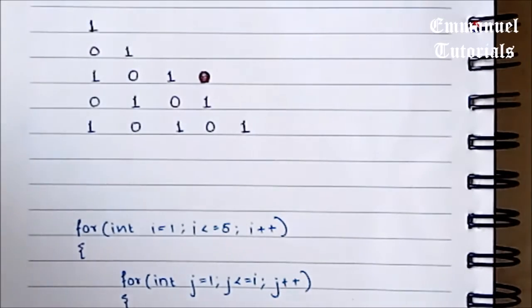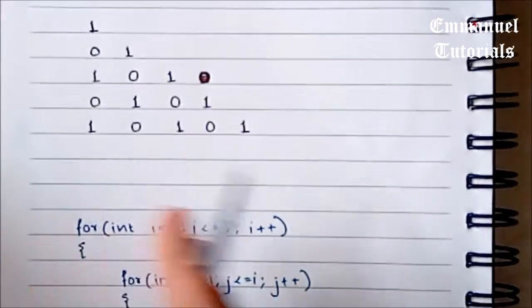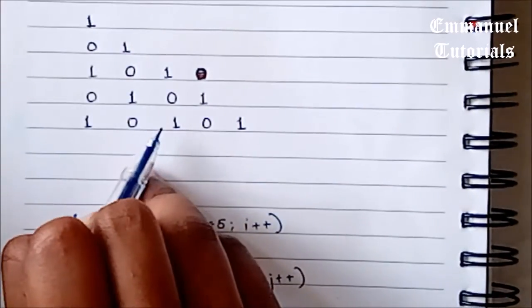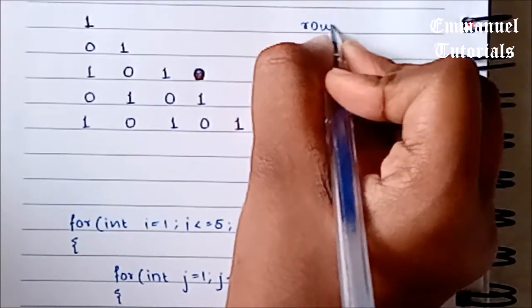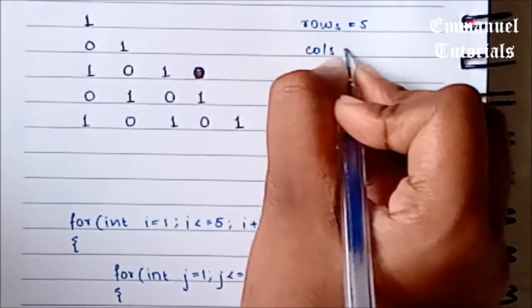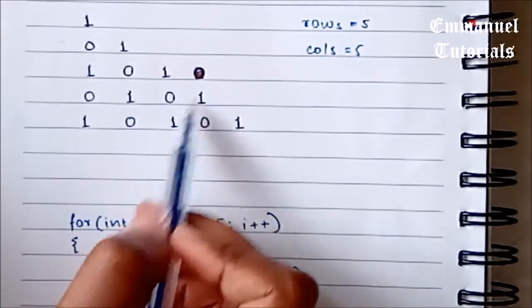Just as the previous videos, we'll try to understand the relationship in this pattern between the values in the rows and the columns. The first thing we'll do is check how many rows we have and how many columns we have. We have a total of 5 rows and also 5 columns.